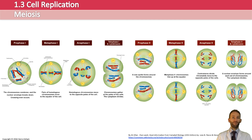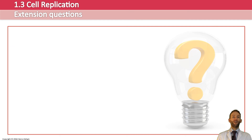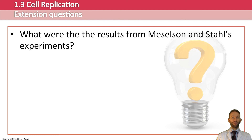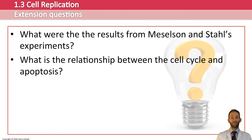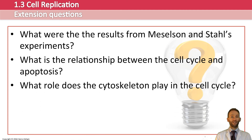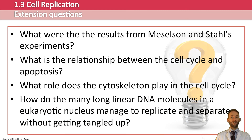As always, it's important to think about how to extend your knowledge on this topic. What were the results from Meselson and Stahl's experiments? What is the relationship between the cell cycle and apoptosis? What role does the cytoskeleton play in the cell cycle? And how do the many long linear DNA molecules in the eukaryotic nucleus manage to replicate and separate without getting all tangled up?